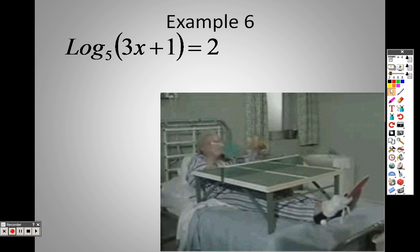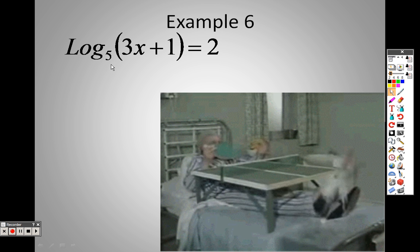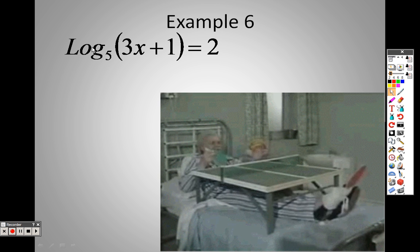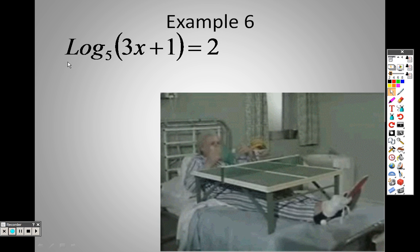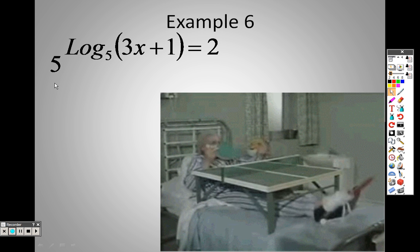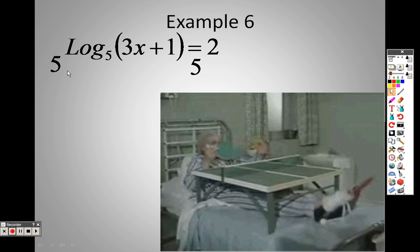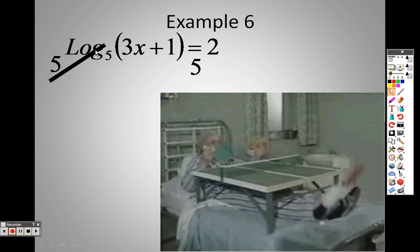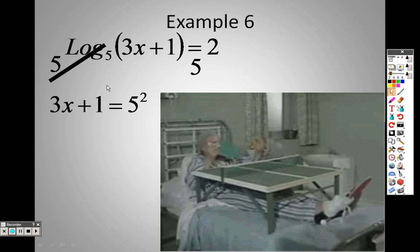Example 6, I can rewrite these as an exponential one. So whatever the base is, I basically take each of these sides to the 5th power. So there's the 5th power, and there's the 5th power. According to our properties that we learned, the 5 and log base 5 cancels out. So all I have left on that side is 3x plus 1 equals 5 squared, and 5 squared is 25.